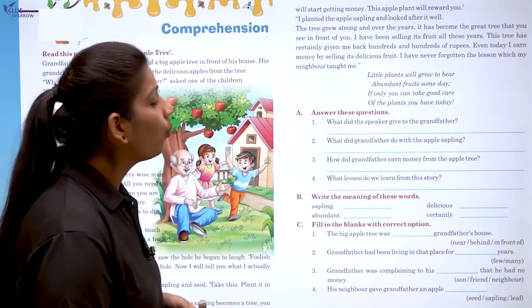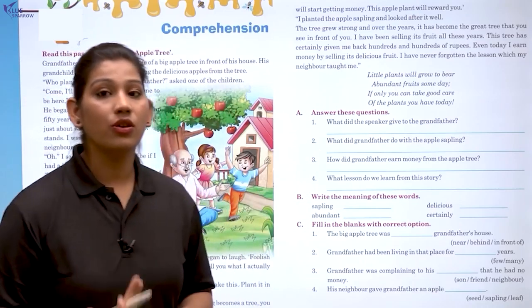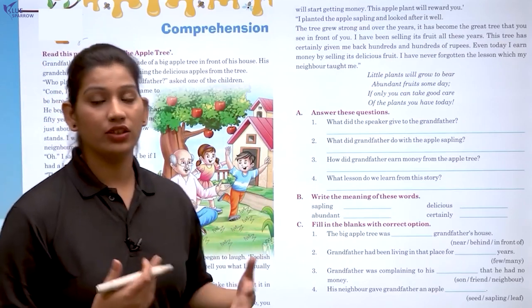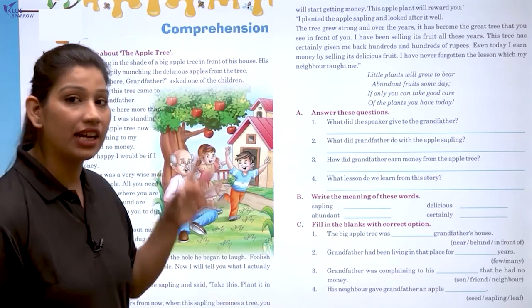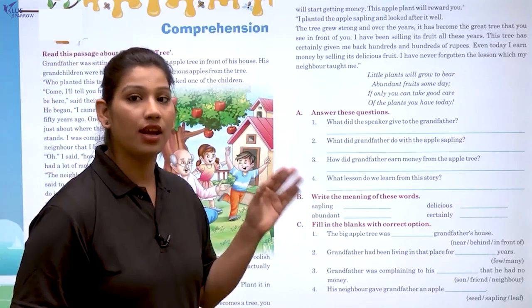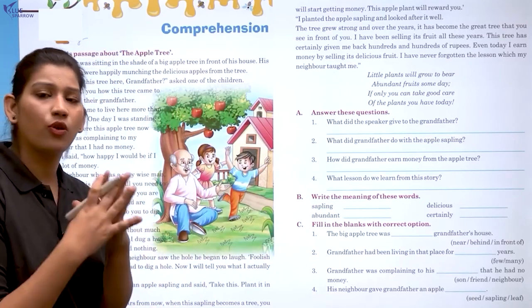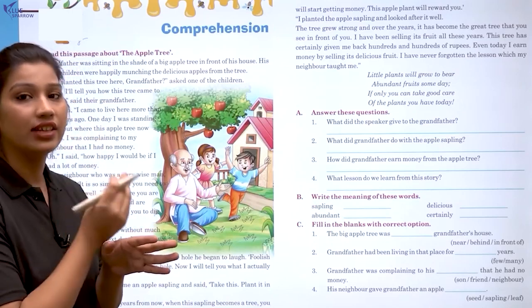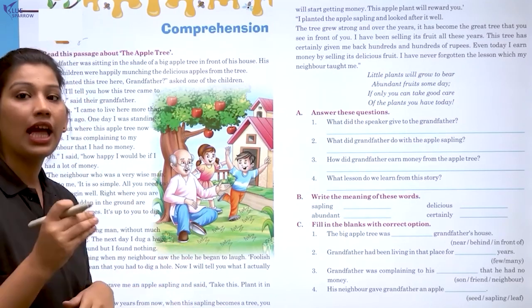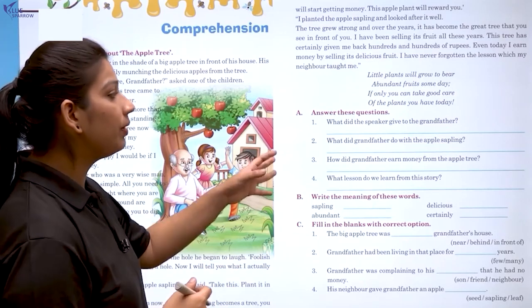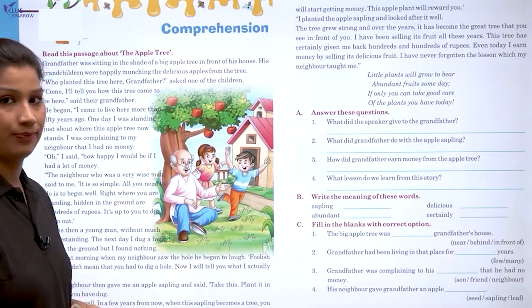The first question is: what did the speaker give to the grandfather? Try to find where the relevant answer is in the paragraph. Always try to find the relevant part of the passage that matches the question. Use keywords — whatever keywords are mentioned in the question, try to find those in your answer.